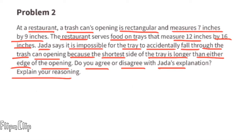Problem number two: at a restaurant, a trash can's opening is rectangular and measures seven inches by nine inches. The restaurant serves food on trays that measure 12 inches by 16 inches. Jada says it is impossible for the tray to accidentally fall through the trash can opening because the shortest side of the tray is longer than either edge of the opening. Do you agree or disagree with Jada's explanation? Right away, I disagree.